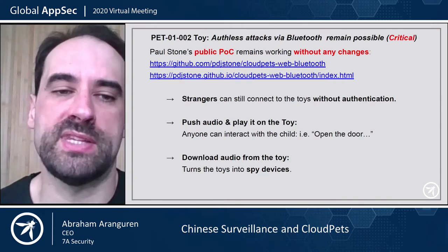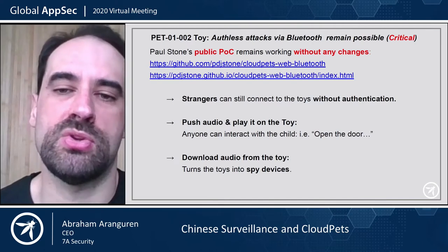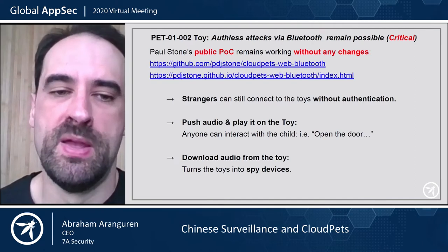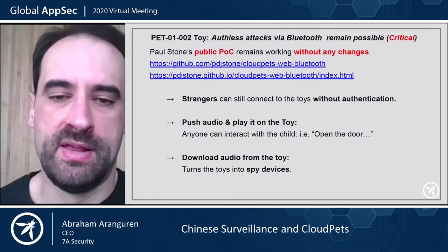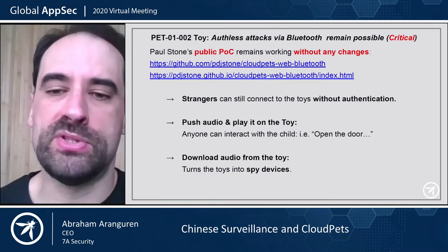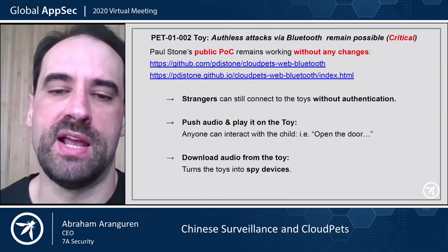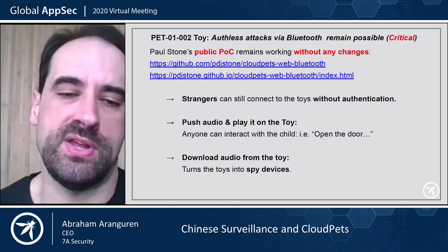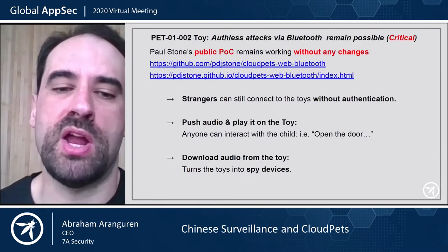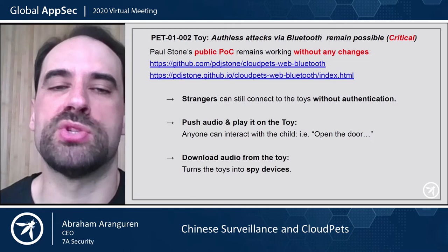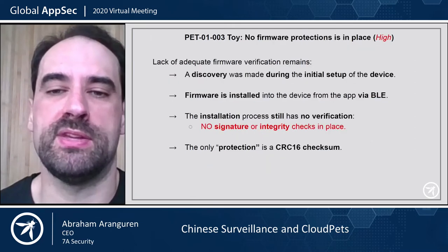Paul Stone's public proof of concept remains working without any changes. You can navigate with your phone and play with the toy without any modification to the proof of concept, proving that absolutely nothing has been fixed. A stranger can connect to the toy without authentication — somebody walking on the street can push audio and play it on the toy, making it say 'open the door, I'm your friend' to a child. And you can also download audio from the toy and use it as a spy device to monitor what's going on.